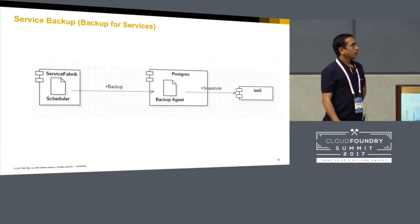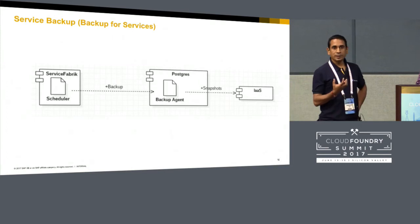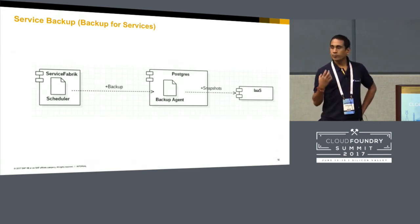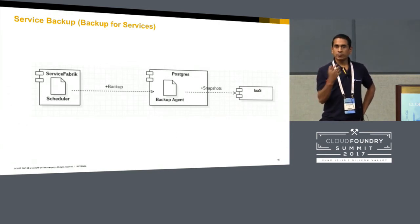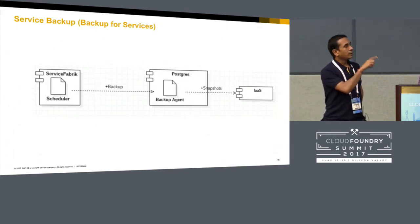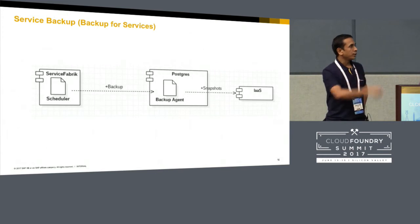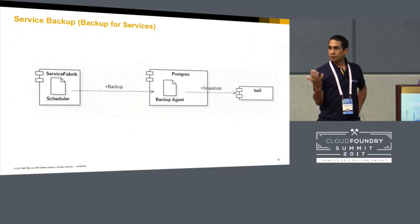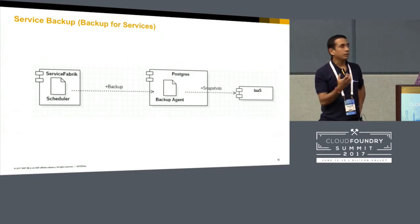For the backup and restore process, an agent on each VM exposes the capabilities available for that node. For a Postgres cluster, only the master exposes the capability to do backup or snapshotting. When Service Fabric queries which nodes can do a backup, only the master reports back, and then the broker invokes that operation over HTTP. We use the IaaS snapshot mechanism rather than service-specific tools like pg_dump, leveraging the snapshot mechanisms of OpenStack and AWS.